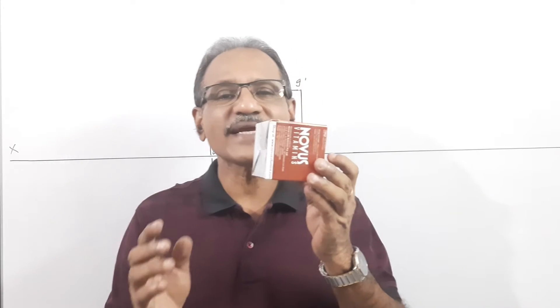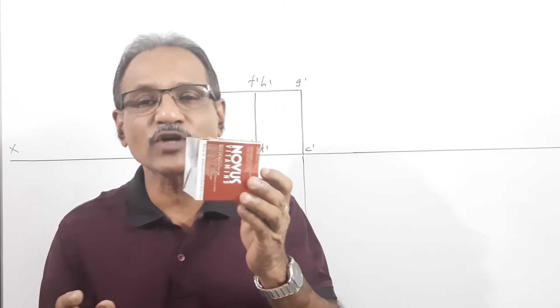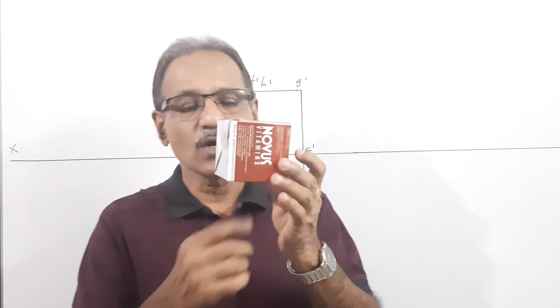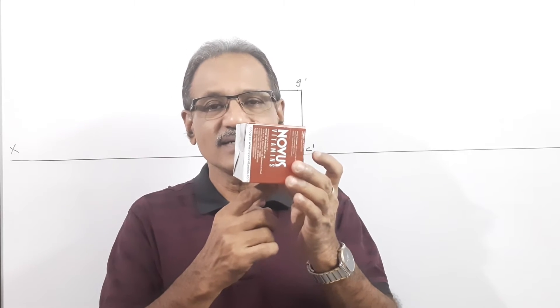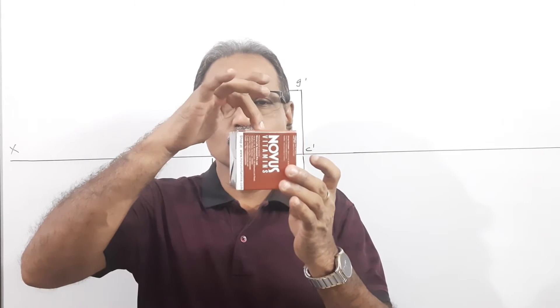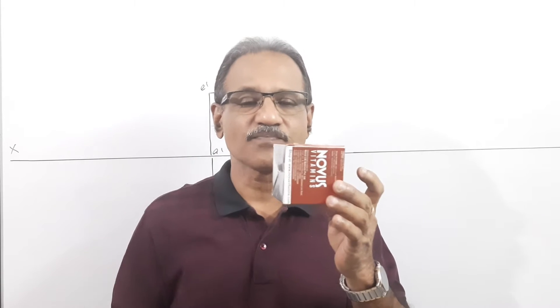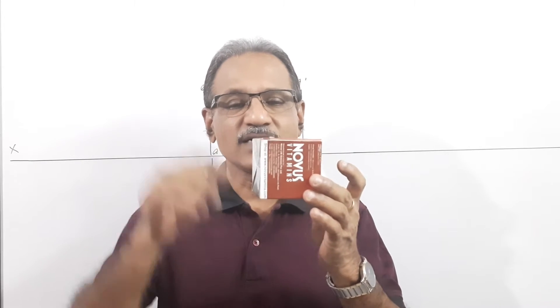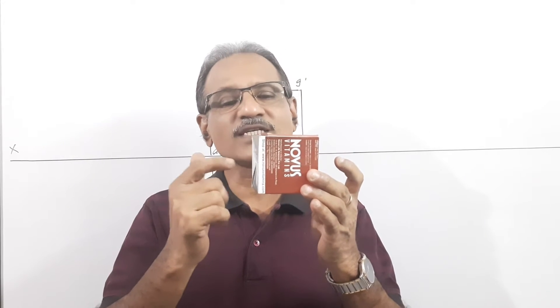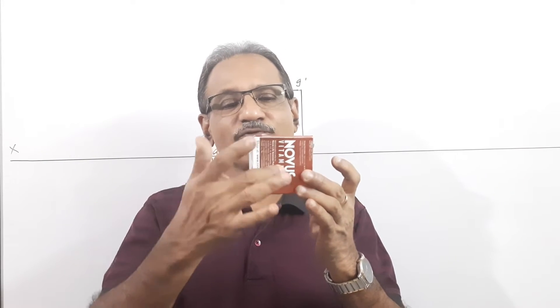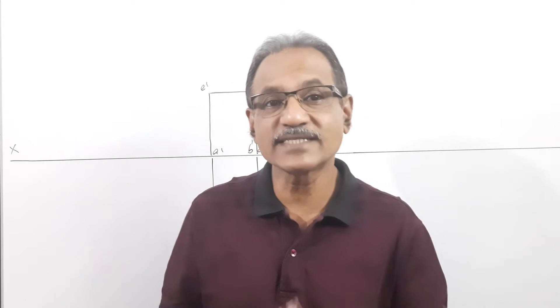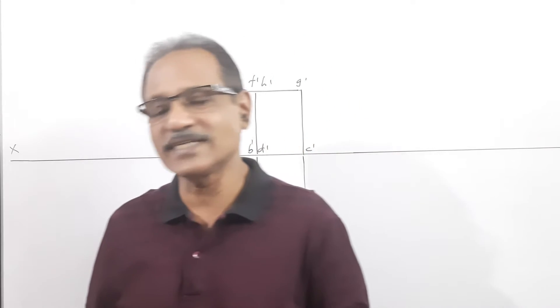How many square faces does a cube have? 1, 2 on the top and base, and 4 on the sides — total 6 square faces.